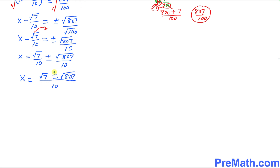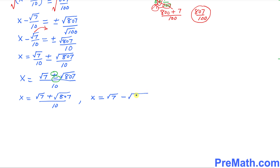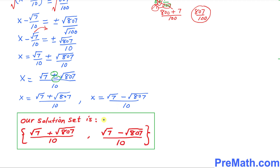Separating the two solutions: the first solution is x = (√7 + √807) / 10, and the second solution is x = (√7 − √807) / 10. And here are our two solutions written in set notation.